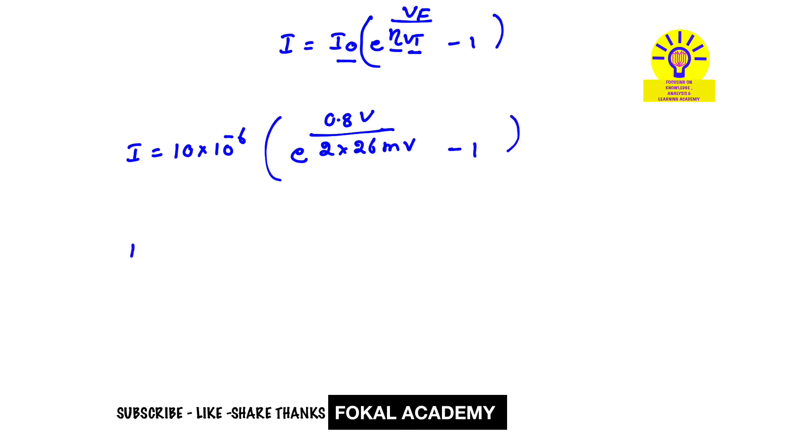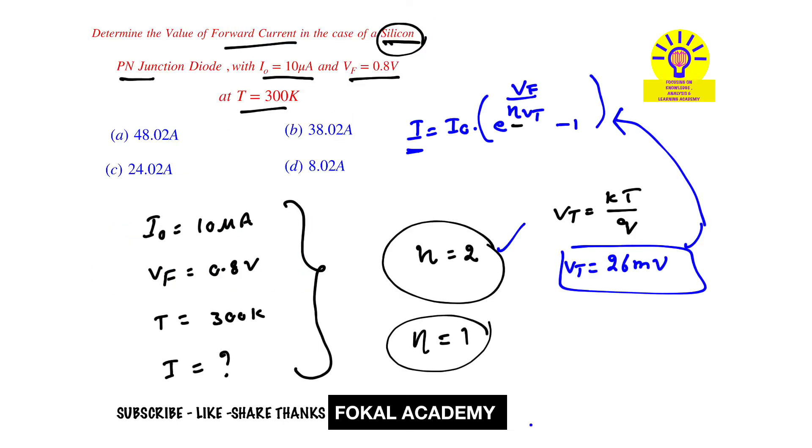So by using calculator we will get this value is equivalent to 48.02 amperes and this is the forward current for the given problem. So from the options, option A is the correct option. And this is the process of simplification.